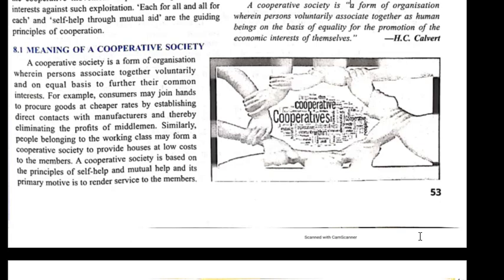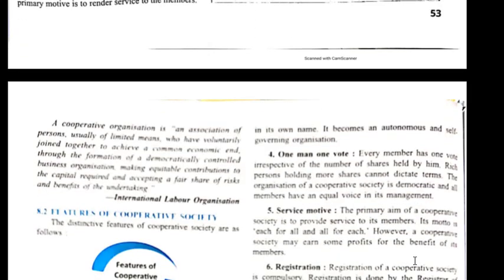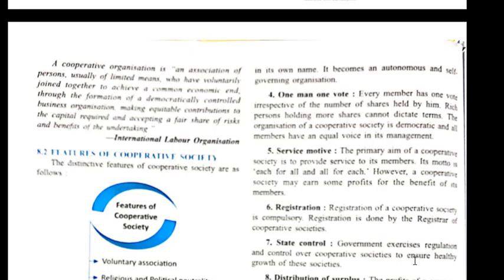In short, a cooperative society is a group of voluntary people coming together by their own wish for their common interest. A cooperative organization is an association of persons, usually of limited means, who have voluntarily joined together to achieve a common economic end through the formation of democratically controlled business organizations, making equitable contributions to the capital required and accepting a fair share of risk and benefit of the undertaking. This is an international level definition.